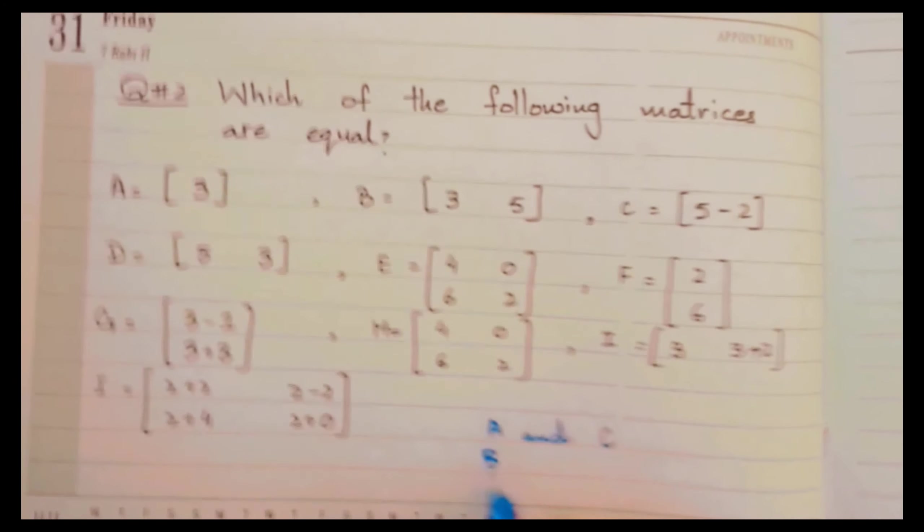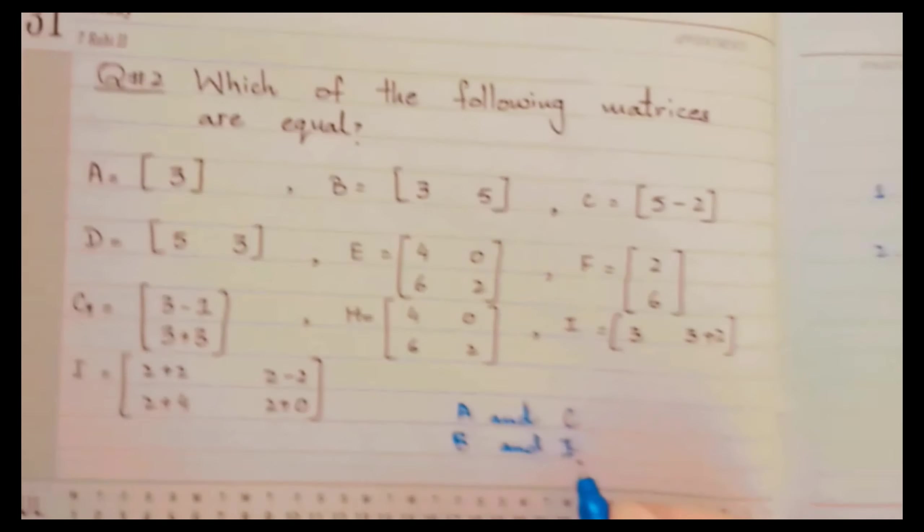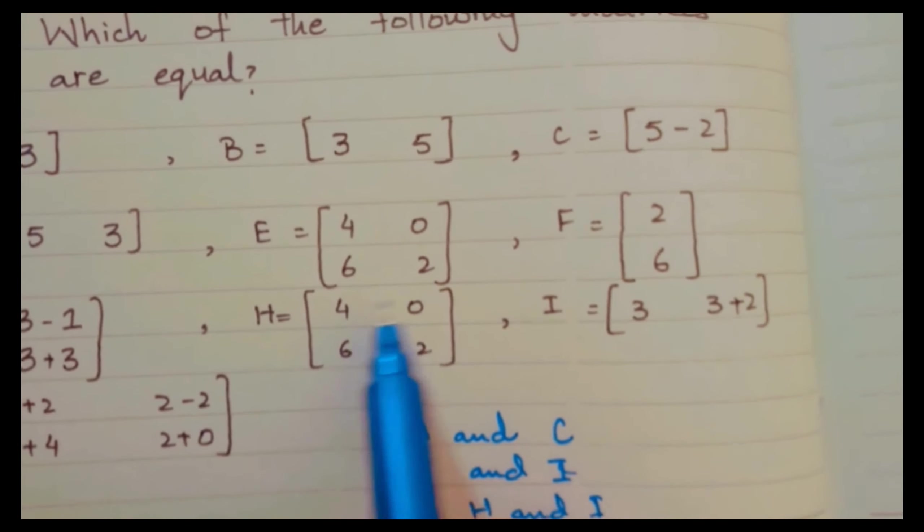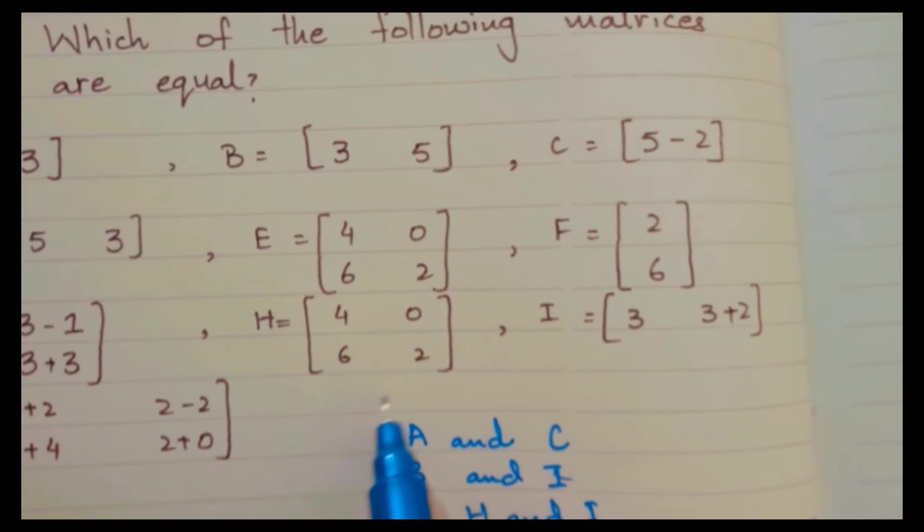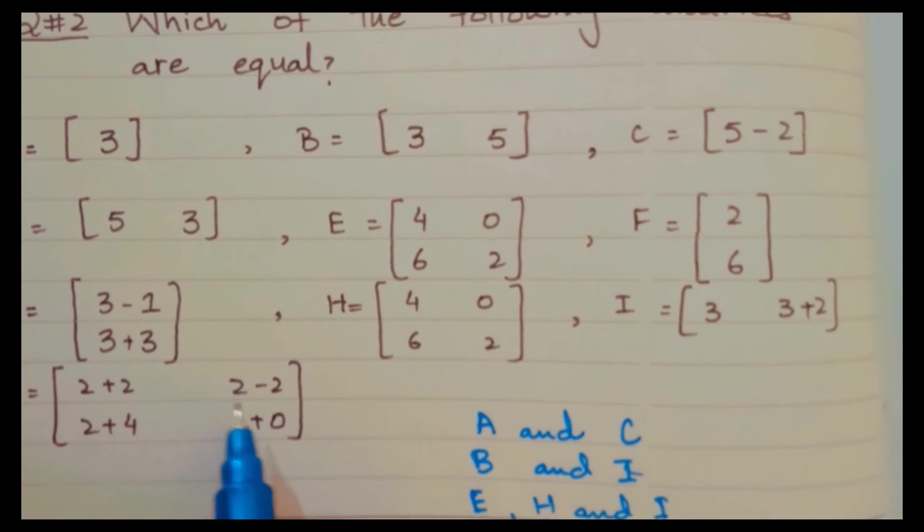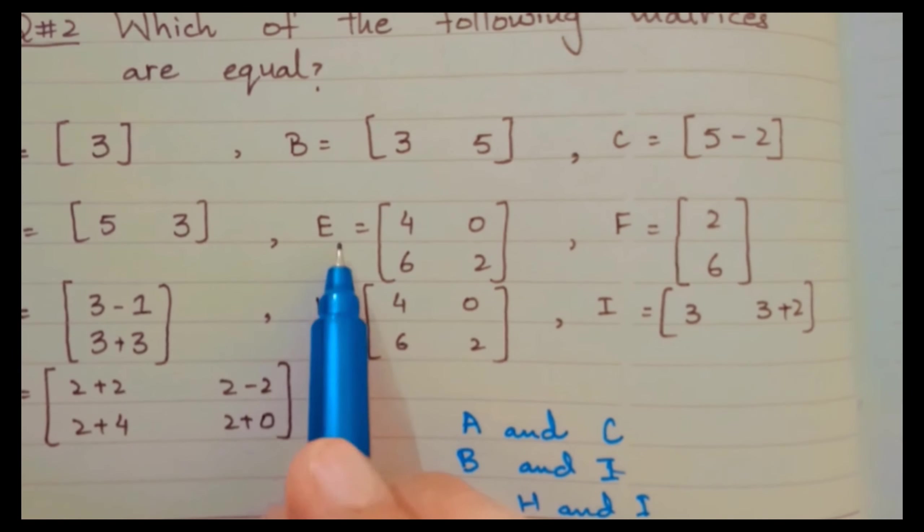Now come to the next matrix, that is E. If you check here, E and H matrix, these both are equal. And if you check the matrix J as well, if we add and subtract the entries, we get the same answer as E and H. It means E, H, and J, these three matrices are equal to each other.